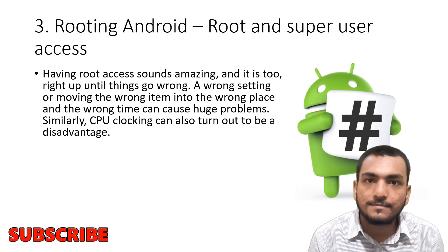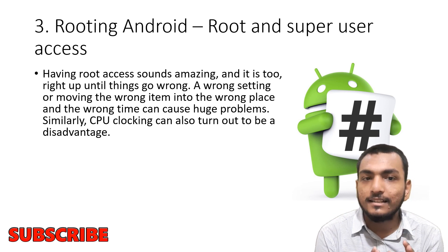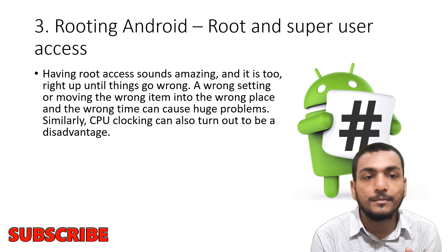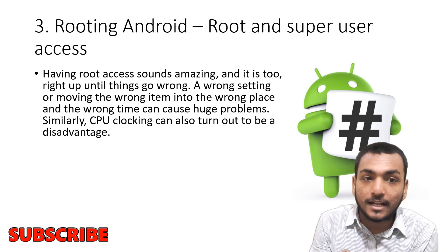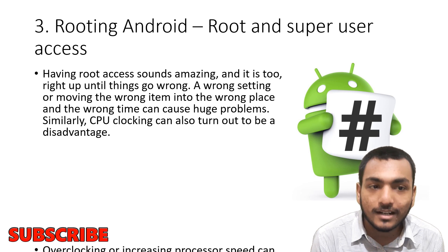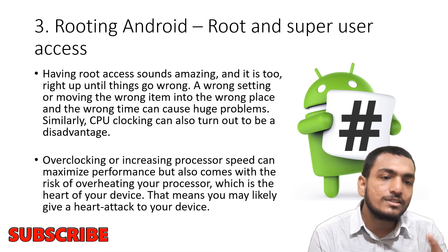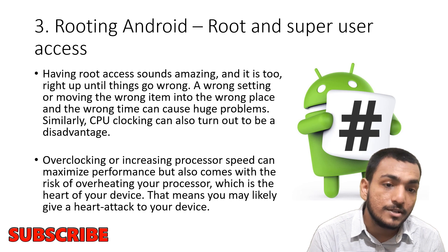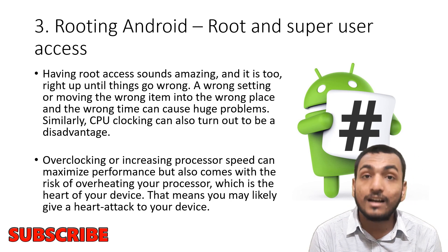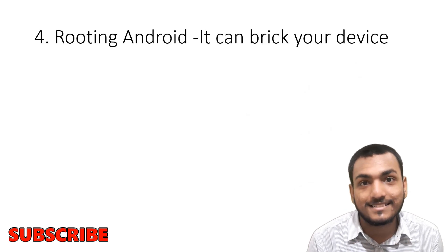Number three: Root and superuser access. Having root access sounds amazing, and it is true right up until things go wrong. A wrong setting or moving the wrong item into the wrong place at the wrong time can cause huge problems. Similarly, CPU clocking can also turn out to be a disadvantage. Overclocking or increasing processor speed can maximize performance but also comes with the risk of overheating your processor, which is the heart of your device — meaning you may likely give a heart attack to your device.